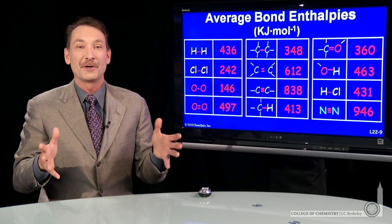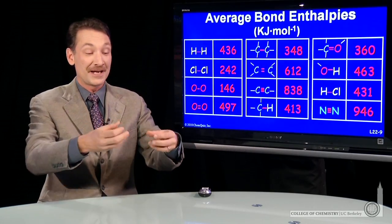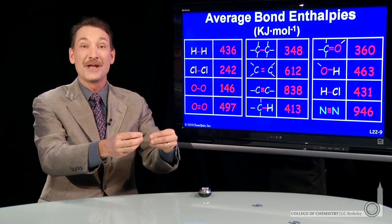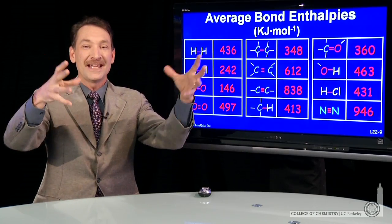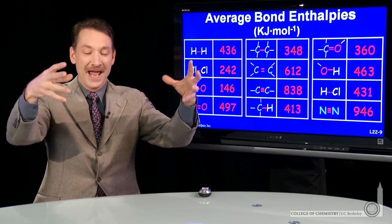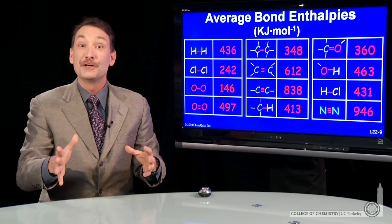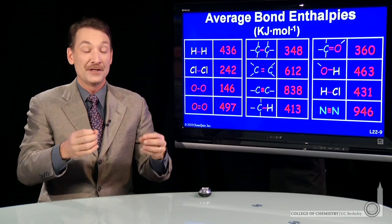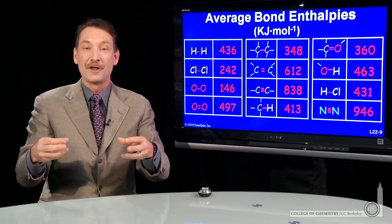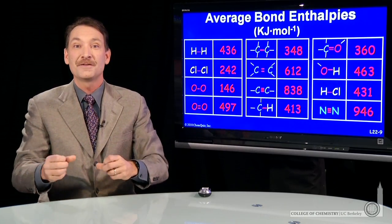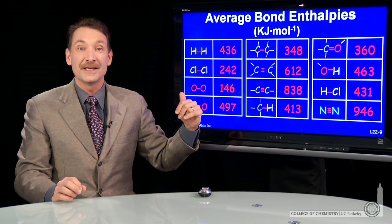When you calculate the enthalpy for a chemical reaction, one way to do it is to think about taking all the reactants, breaking them up into atoms, and then taking those atoms and forming the products. In order to do that, you need to know the bond enthalpies of all the reactant bonds and all the bond enthalpies of the product bonds. So you need a table that looks like this.